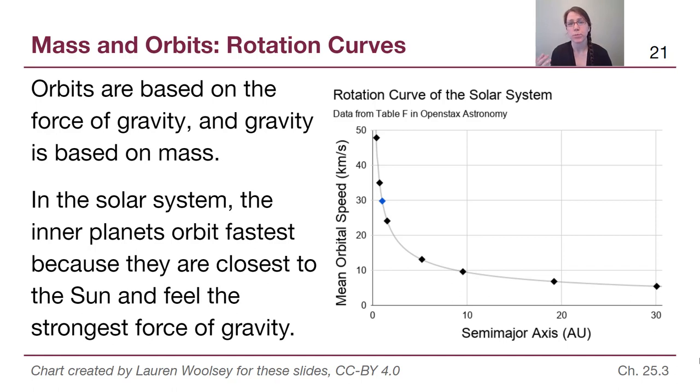When we plot planetary data then, we get this curve of Mercury, Venus, Earth. Earth is colored in blue instead of black points. Mars, Jupiter, Saturn, Uranus, and Neptune. We see this curve come down where the farther away we are, the slower those planets are moving. That's what we expect if we are getting farther and farther away from the same amount of material.